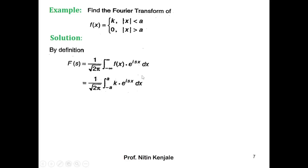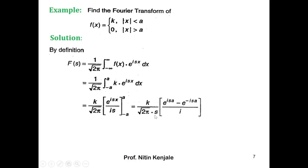Now all we have to do is solve this integral. Since k is a constant, we can take it out. The integration of e raised to isx is e raised to isx upon is, evaluated over the limit minus a to a. Substituting these limits, with s as a constant taken out, we have outside k upon root 2π into s, and inside we have 1 upon i into e raised to isa minus e raised to minus isa.